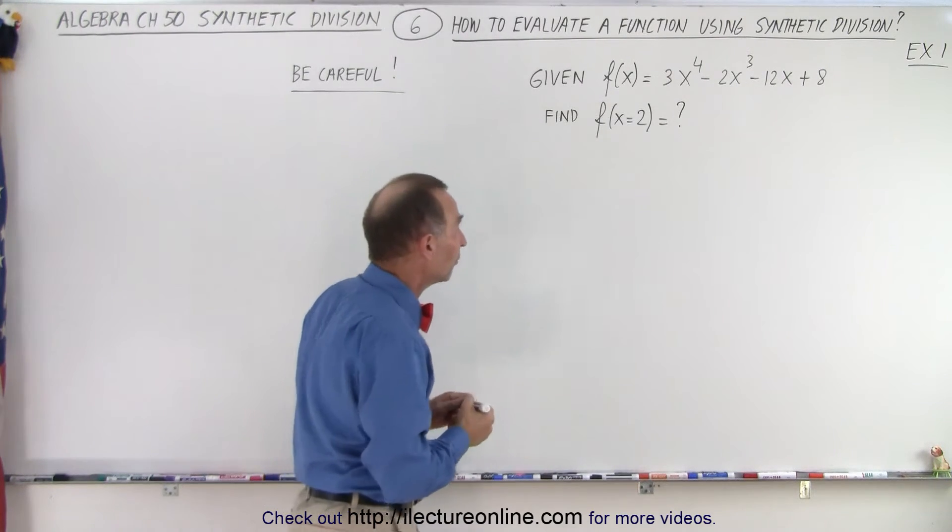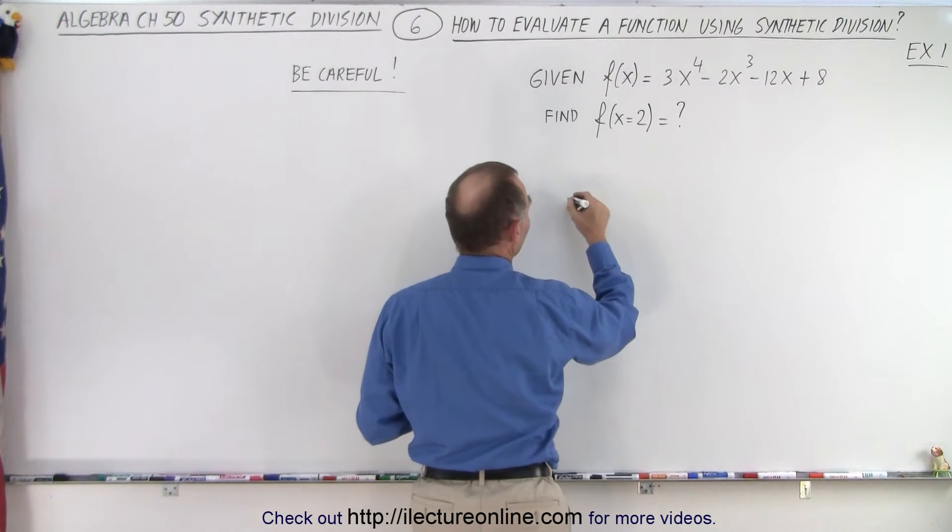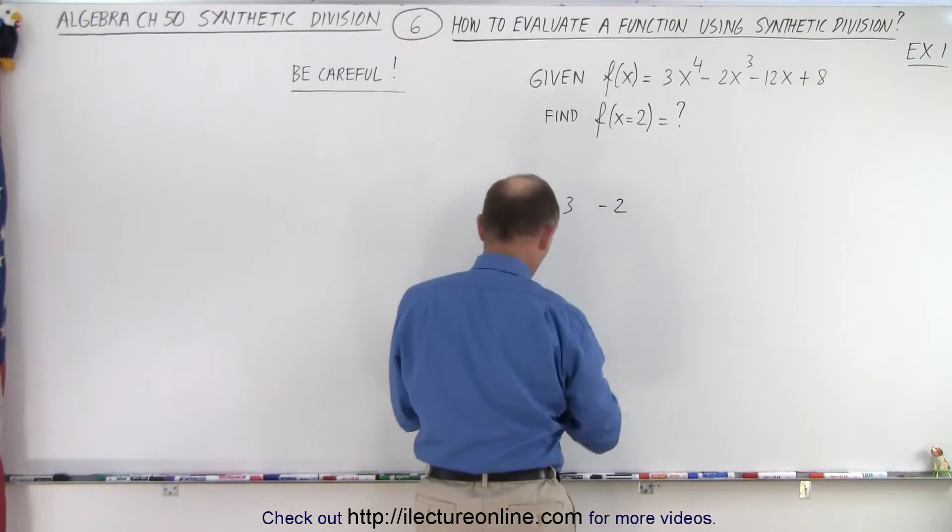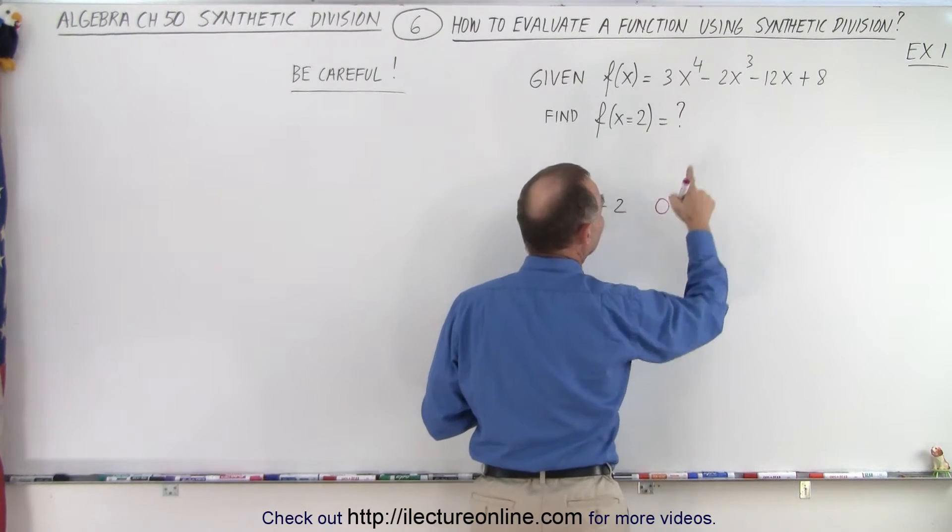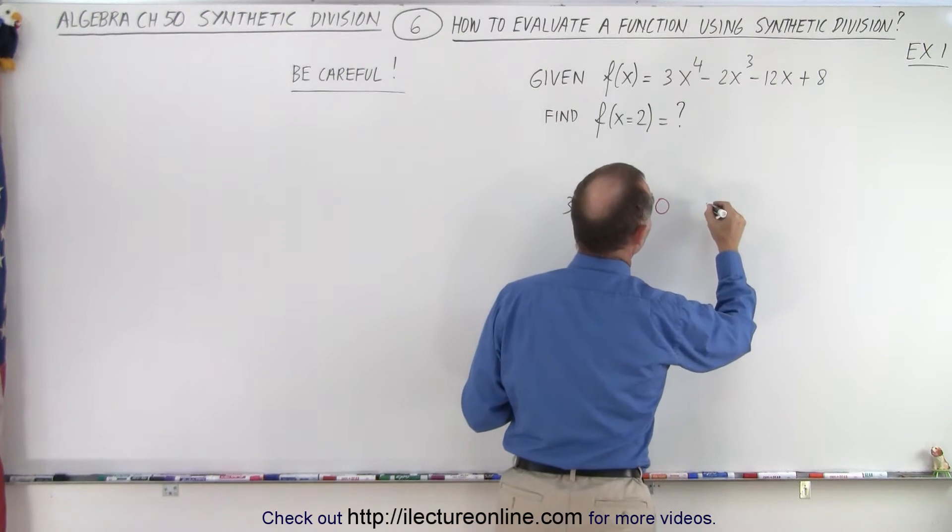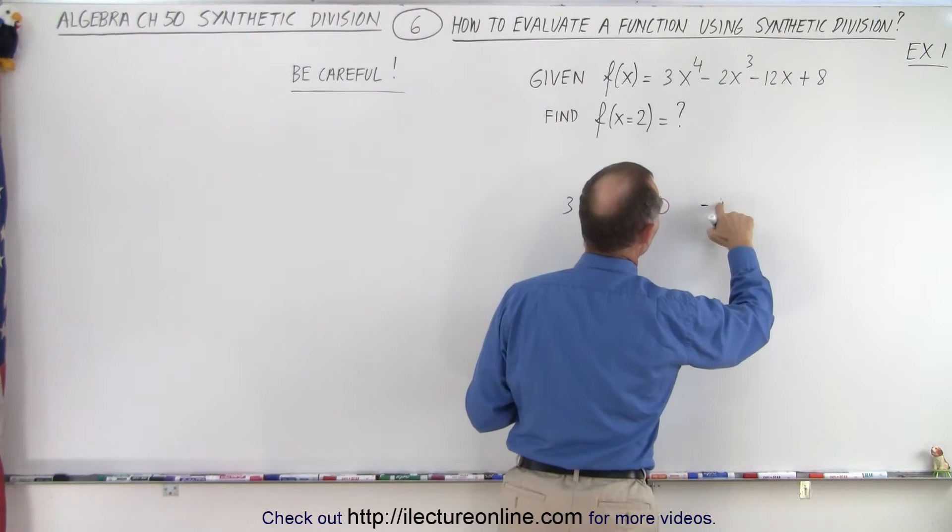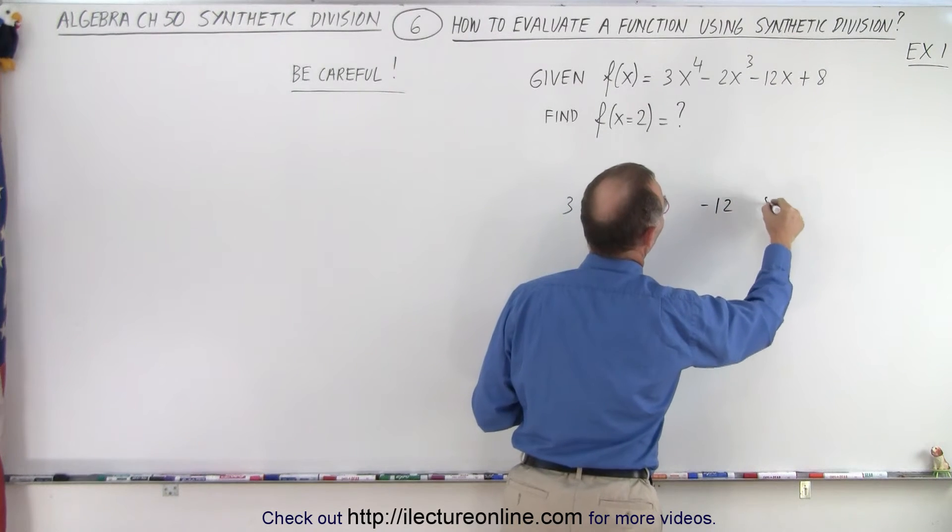So let's go ahead and now solve it. We find the numerical coefficients for every one of the terms. We have 3, negative 2. But notice here we're going to put in the number 0 for the x squared term that's missing. Then we have a negative 12 and plus 8.